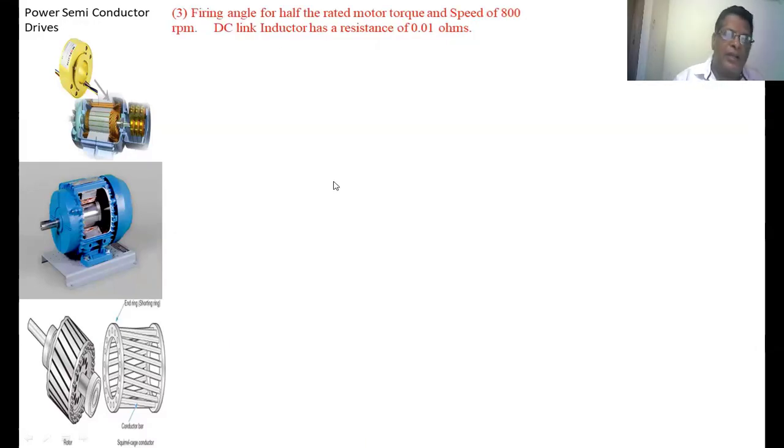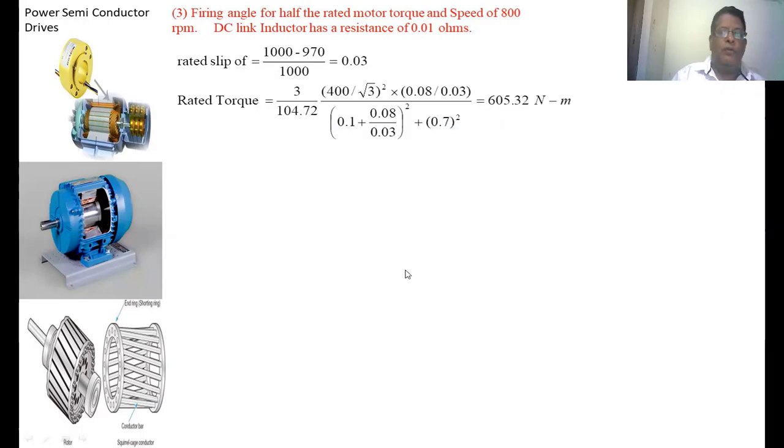(3) Firing angle for half the rated motor torque and speed 800 rpm. The DC link conductor has a resistance of 0.01Ω. We don't know how much torque is developed in the induction motor at full load, so first we are going to calculate the torque developed at full load.